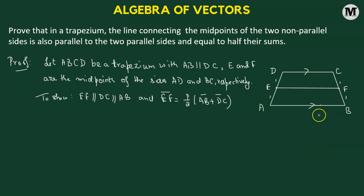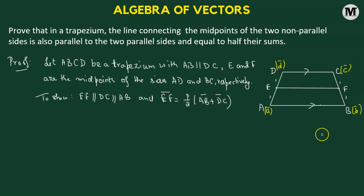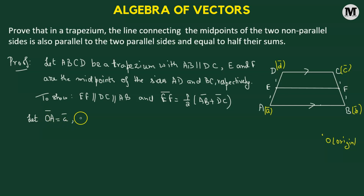We start by considering the position vectors of all four vertices of the trapezium. Let vector a, b, c, d correspond to the position vectors of vertices A, B, C, D respectively. This means we have some point O as the origin of a coordinate system, and OA vector = a, OB vector = b, OC vector = c, OD vector = d.